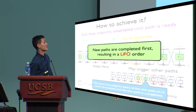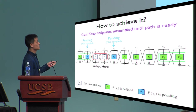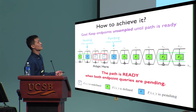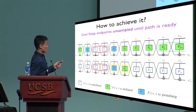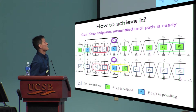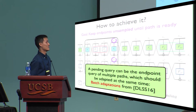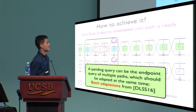After the query to F_6 is defined, we have the other endpoint query, which is also marked pending. We say a path is ready when both endpoint queries are pending. A query can be the endpoint query of multiple paths, and since our goal must be kept for all these paths, they should be adapted at the same time — after the query at x_5 is defined. This is the batch adaptation idea from work by Dodis, Reyzin, Stam, and Steinberger: paths that share an endpoint query should be adapted at the same time.